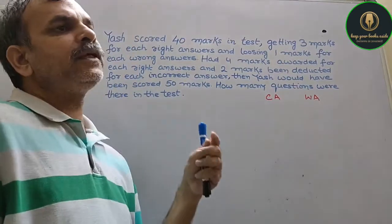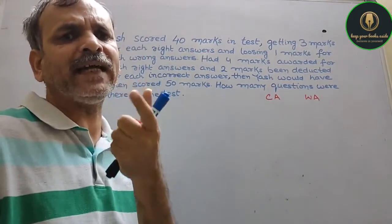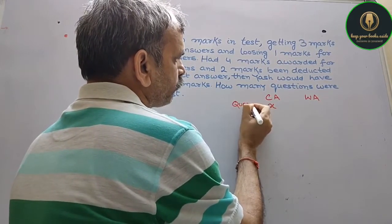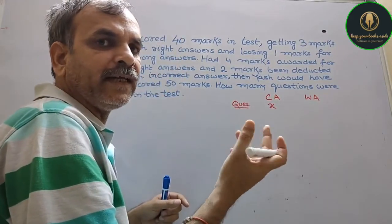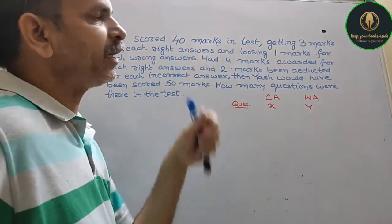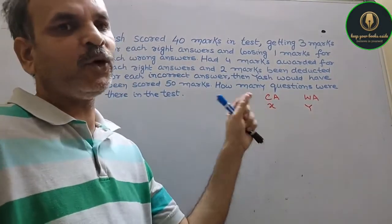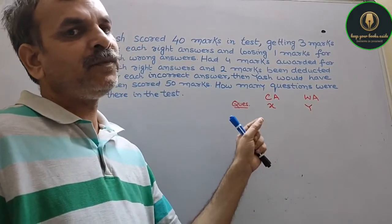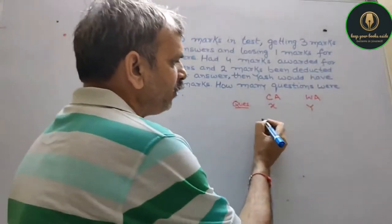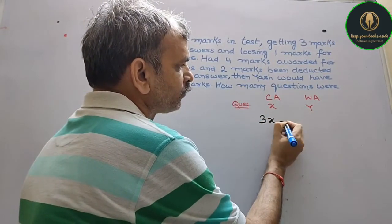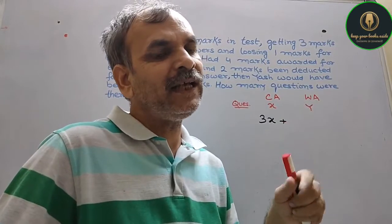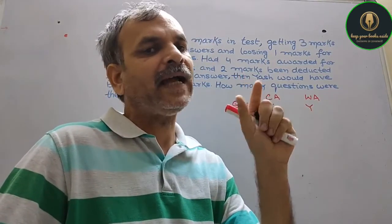So, what did Yesh do? Yesh answered X questions correctly. Now, as per first statement, in every correct question he will get 3 marks. That means he will score 3 into X, so he will score 3X. Plus, now in Y answers he will lose 1 mark. That means minus Y.